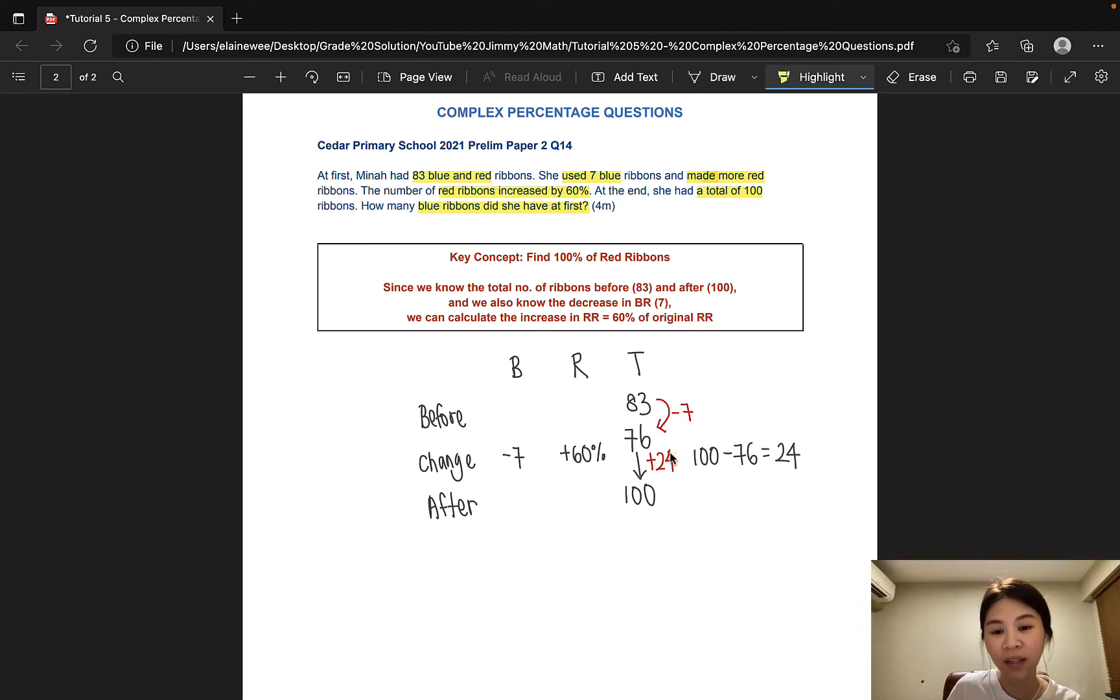That would mean that 24 red ribbons is actually 60% of the total red ribbons. Now that we have this information, we can finally achieve our objective of finding 100% of red ribbons. So let's write that down. So 60% of red ribbons is equal to 24.